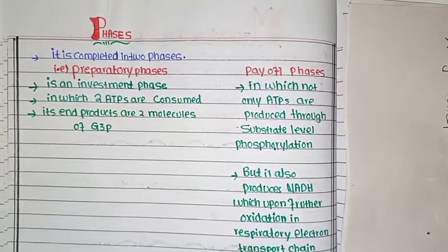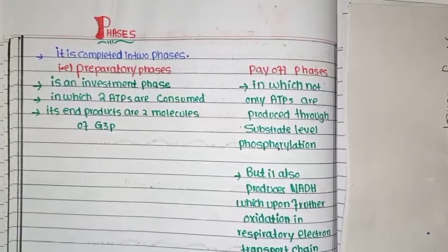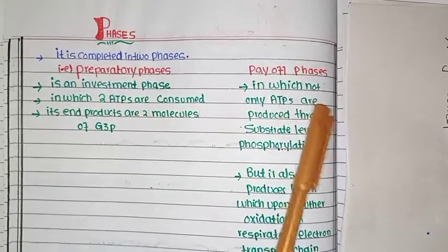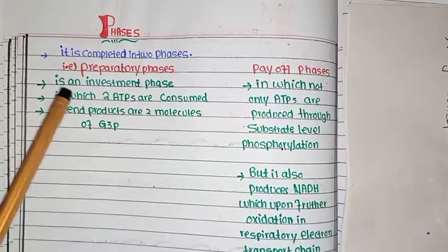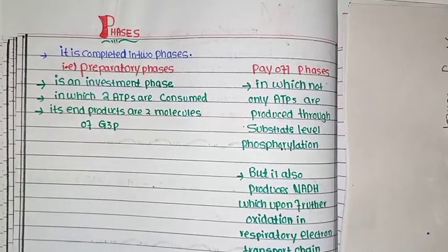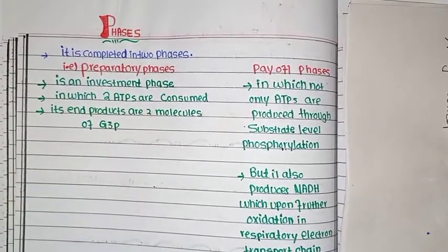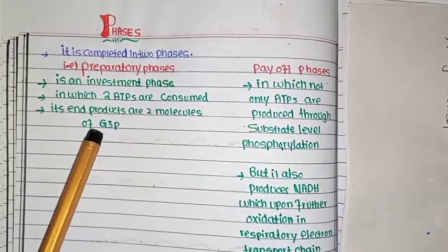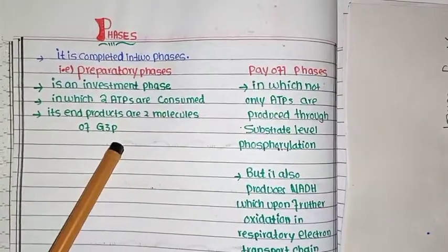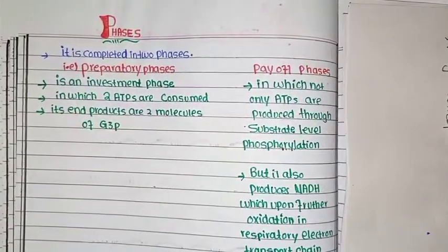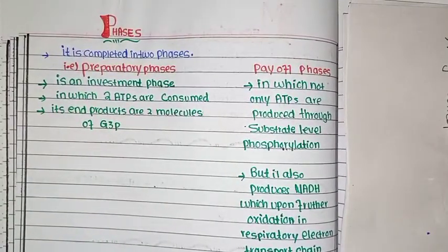In glycolysis there are two phases: one is the preparatory phase and one is the payoff phase. In the preparatory phase, also called the investment phase, we invest energy — two ATPs are consumed. The end products of this phase are two molecules of G3P (glyceraldehyde-3-phosphate).